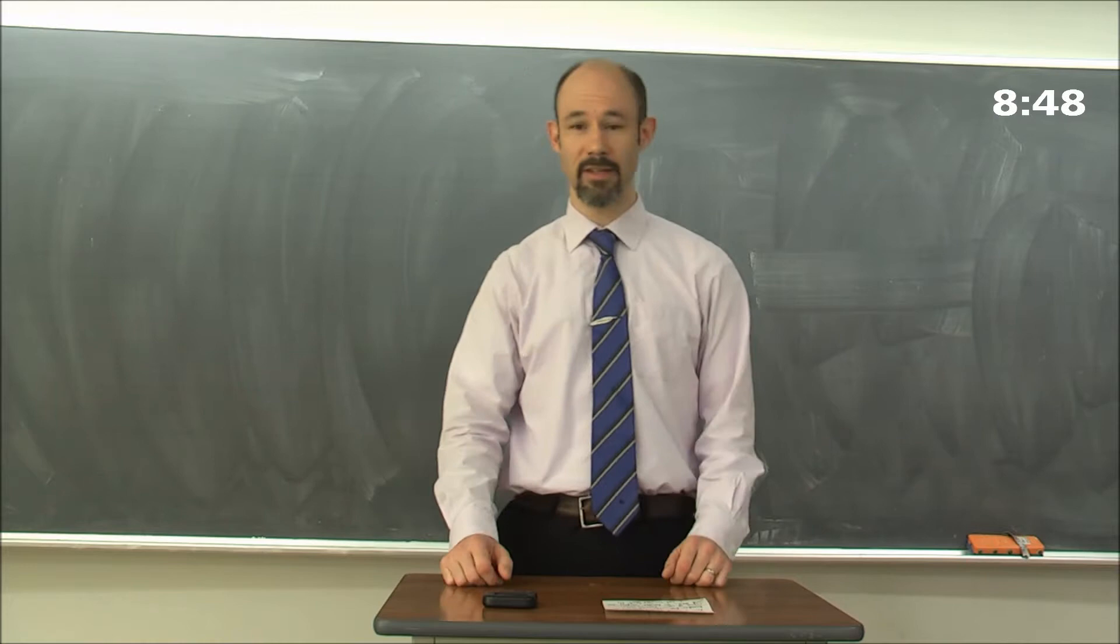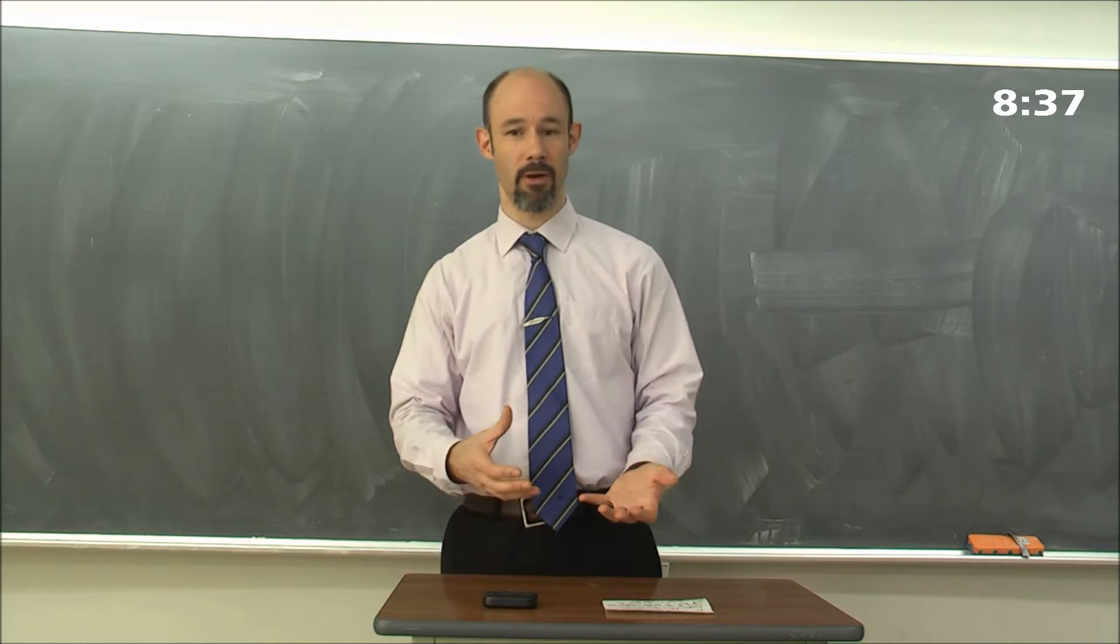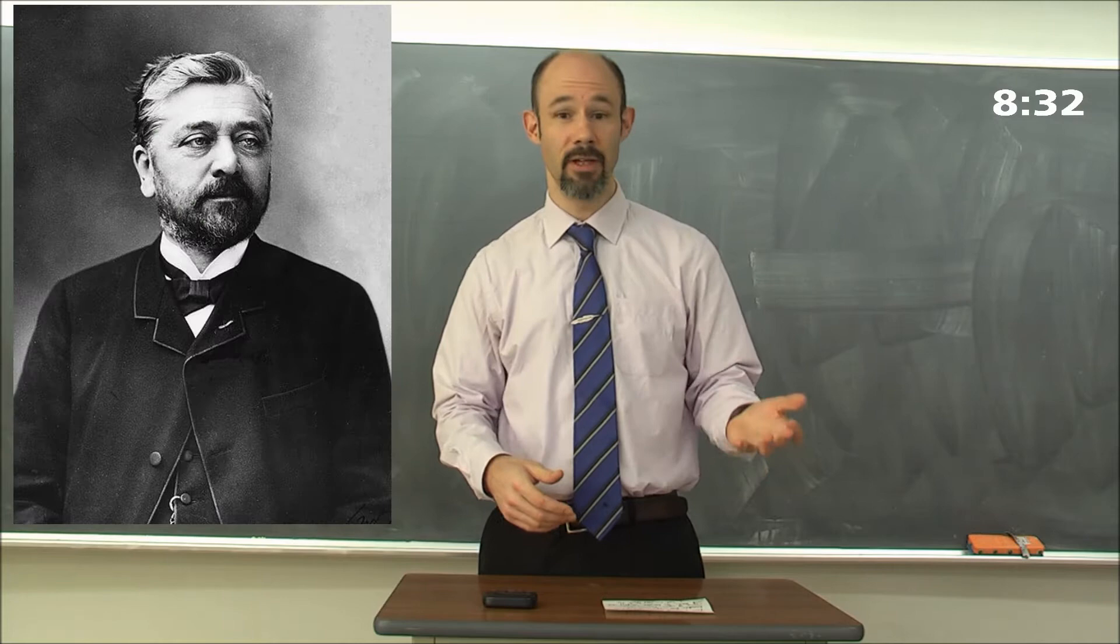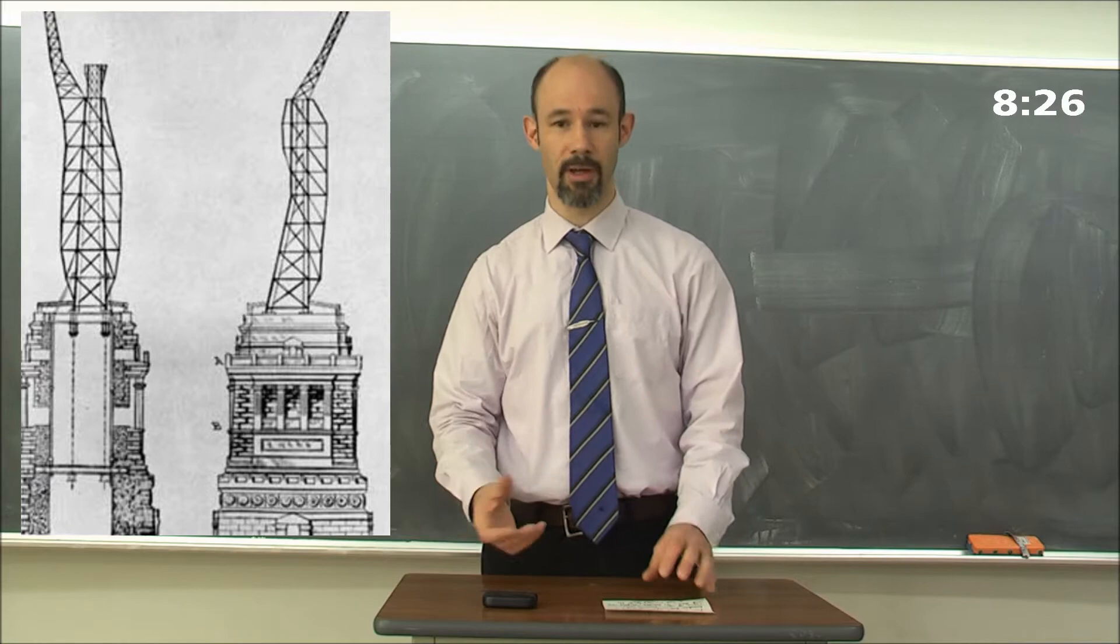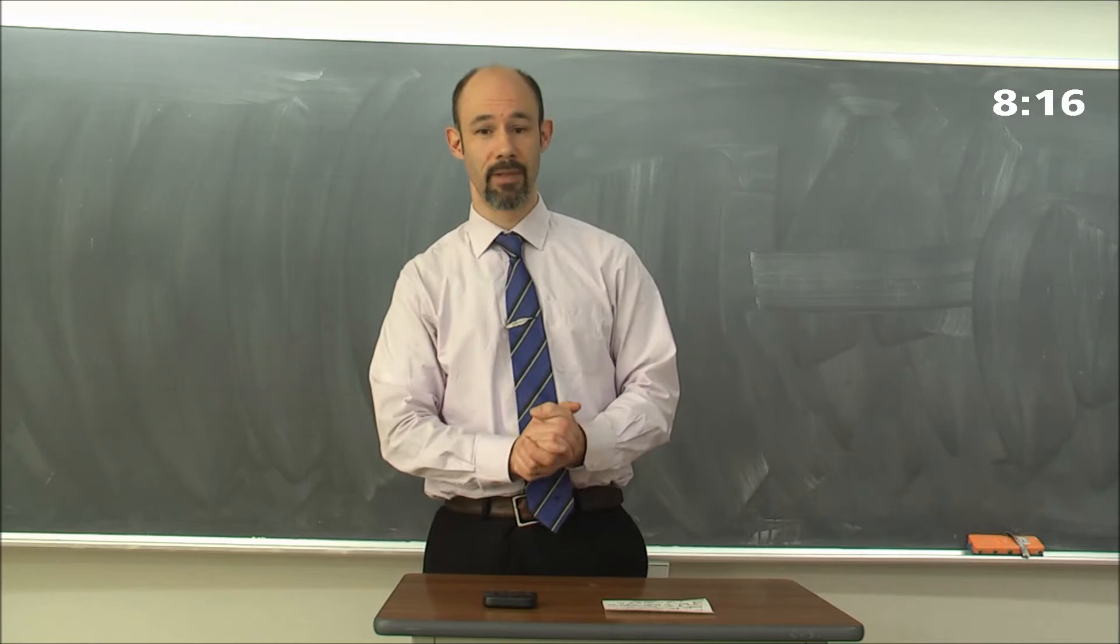Bartholdi was a sculptor, so he went away and he designed the statue. But he's a sculptor. He works with clay. He works with rock. He doesn't work with metals. So he turned to his friend, Gustave Eiffel, and he said to him, can you design the structure? And Eiffel said, sure, okay. Eiffel is famous for working with metal. You've probably heard about him before. He designed a very famous building in France, the Eiffel Tower. So he designed the central structure for it.